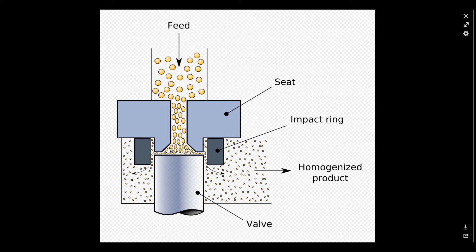A typical example is the homogenization of milk, where the milk fat globules are reduced in size and dispersed uniformly through the rest of the milk. As you can see in this picture, these molecules — which can be fat molecules in milk — enter this nozzle. Because of the high back pressure, these molecules break down into smaller pieces, and this process is called homogenization.